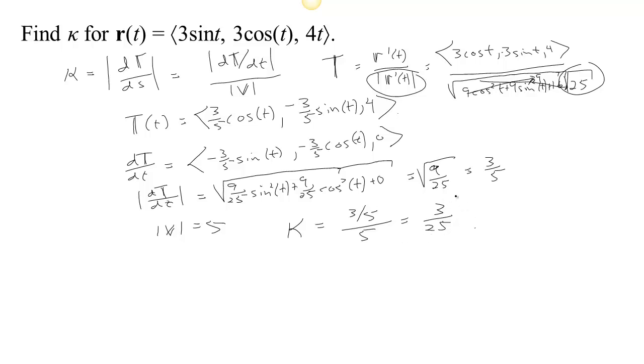Okay, so we know that kappa is 3/25. Therefore, the radius of curvature is equal to 25/3.